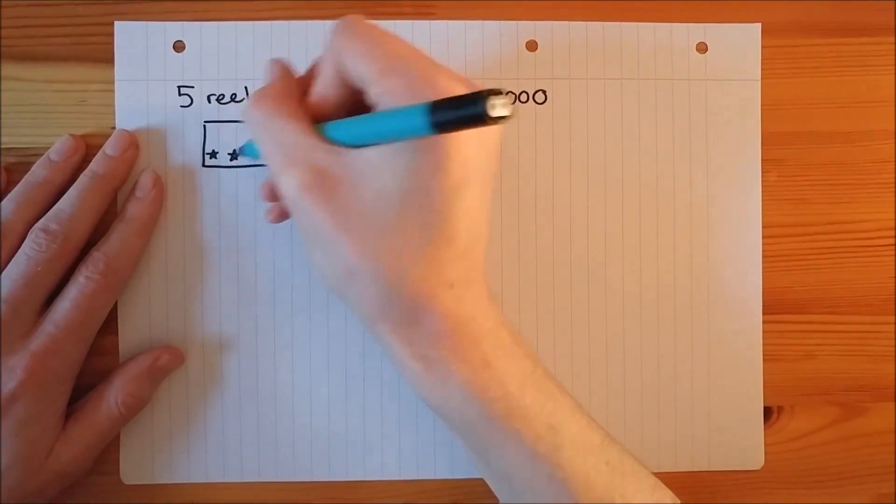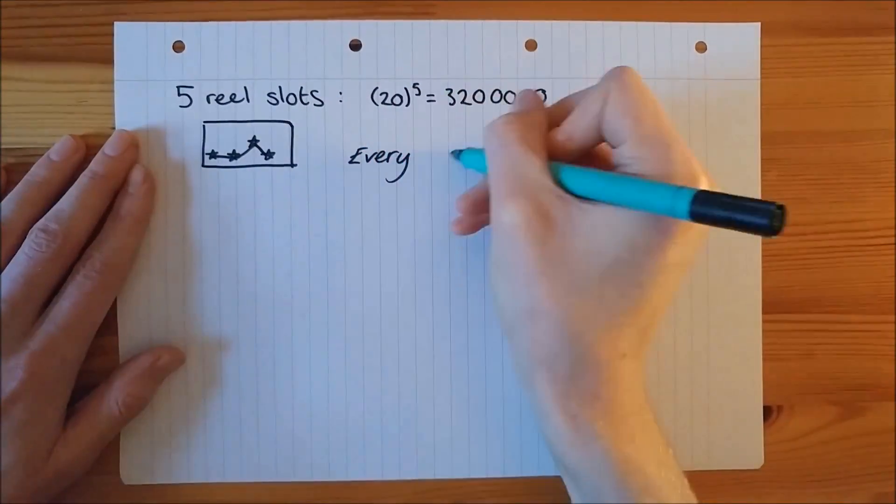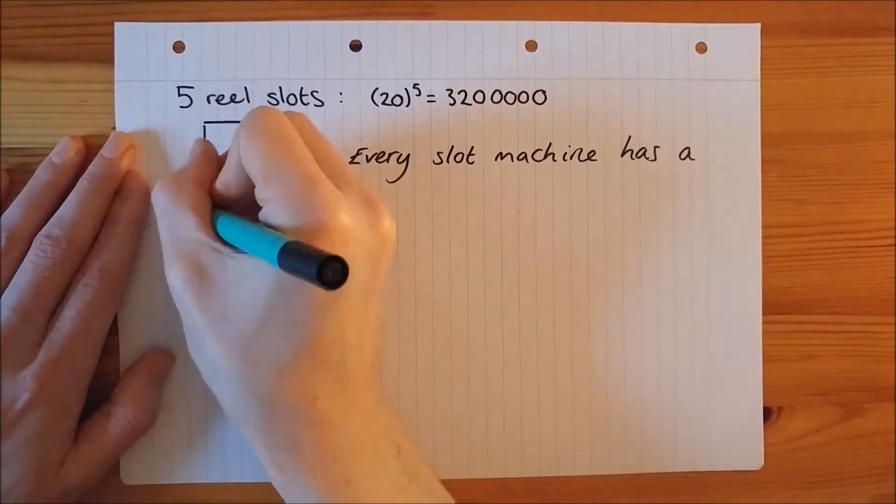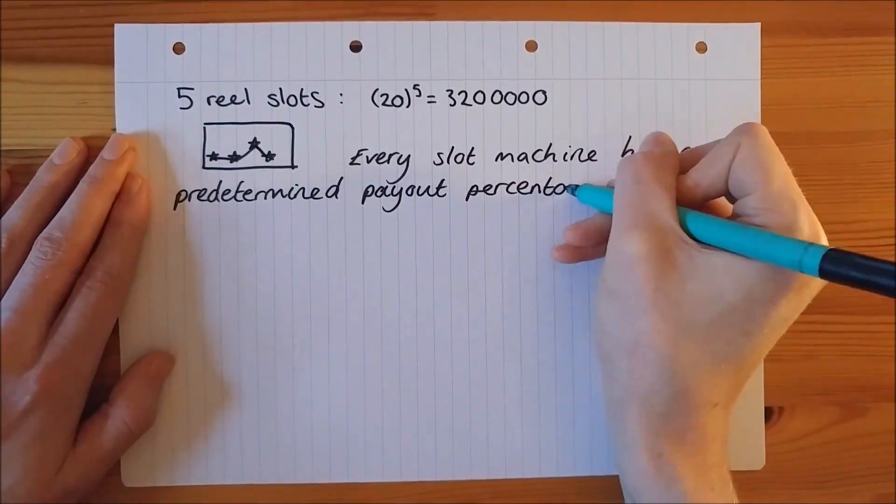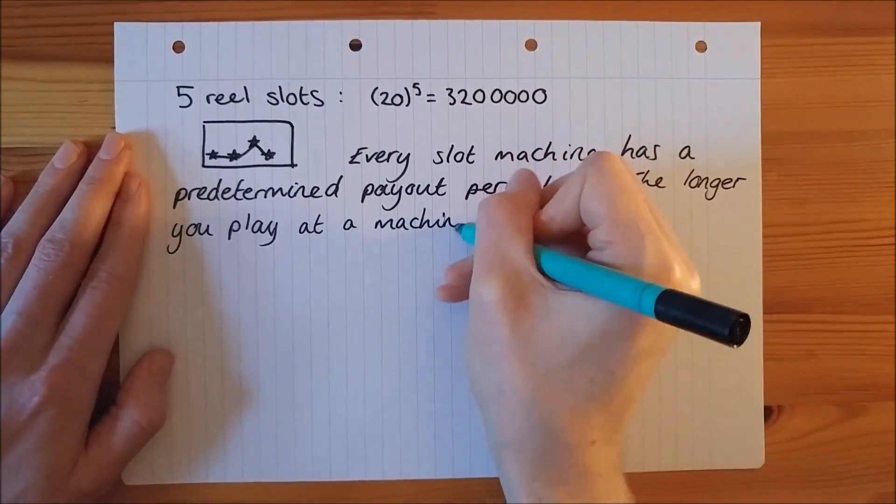To compensate for this, there are added ways of winning, for example diagonal matches. Every slot machine has a predetermined payout percentage. The longer you play at a machine, the closer the actual payout comes to the theoretical payout.